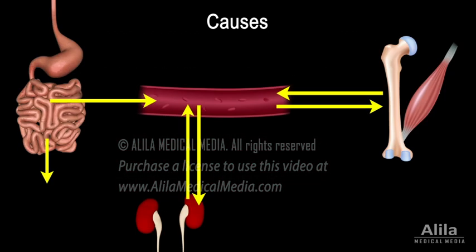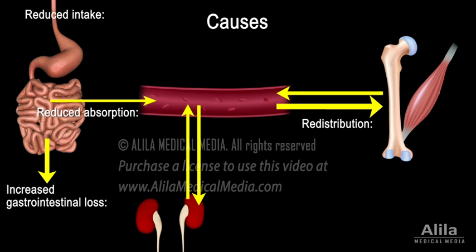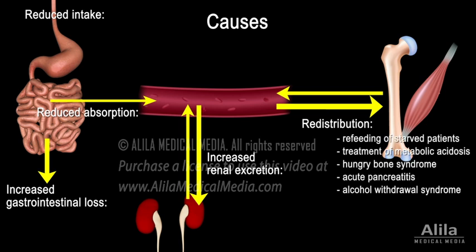Hypomagnesemia may result from one or more of the following mechanisms: shift of magnesium from extracellular fluid into cells or bone, reduced dietary intake, reduced intestinal absorption, increased gastrointestinal loss, and increased renal excretion. Hypomagnesemia due to redistribution may occur during refeeding of starved patients, treatment of metabolic acidosis, in hungry bone syndrome, acute pancreatitis, or alcohol withdrawal syndrome.